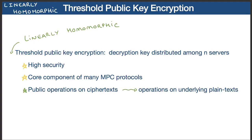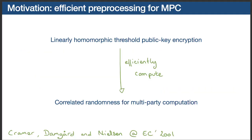Threshold public key encryption protocols are even more useful when they are homomorphic. This means that public operations on ciphertexts translate to operations on the underlying plaintexts. In particular, at Eurocrypt 2001, Cramer, Damgård and Nielsen provided a new approach to multi-party computation from linearly homomorphic threshold encryption schemes.